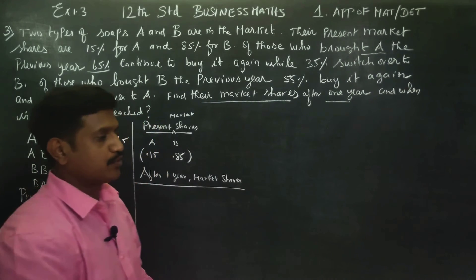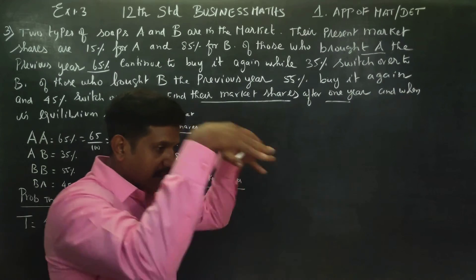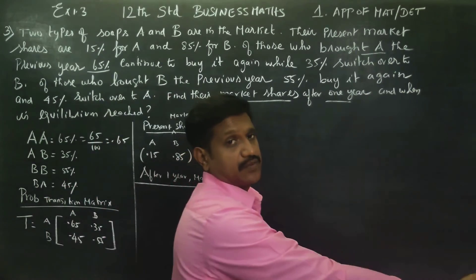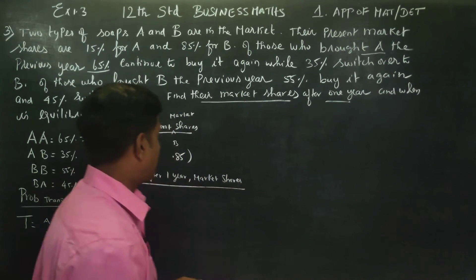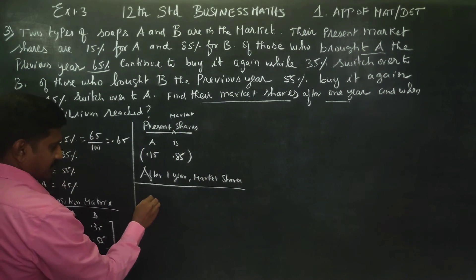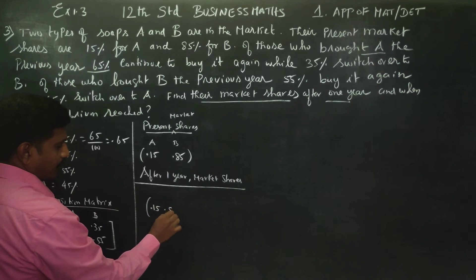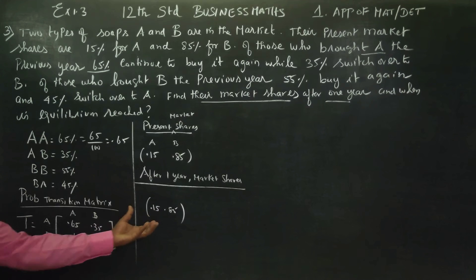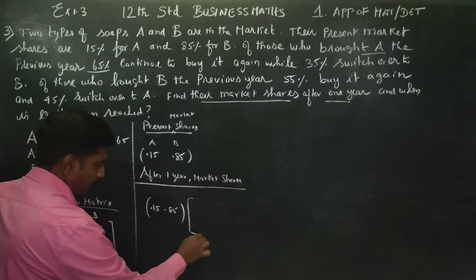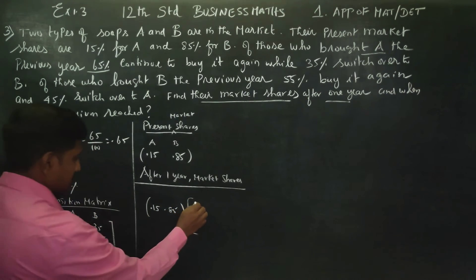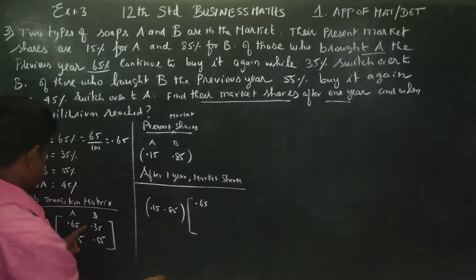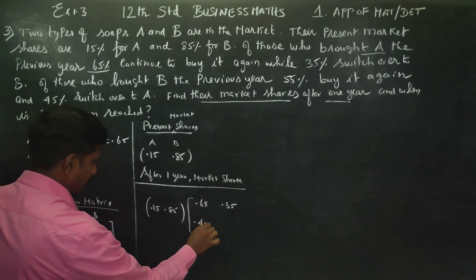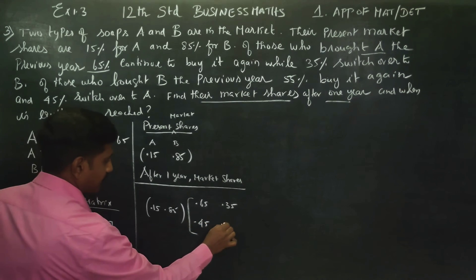Probability transition matrix. This is the present market: 0.15, 0.85. This is my present into probability transition matrix: 0.65, 0.35, 0.45, 0.55.